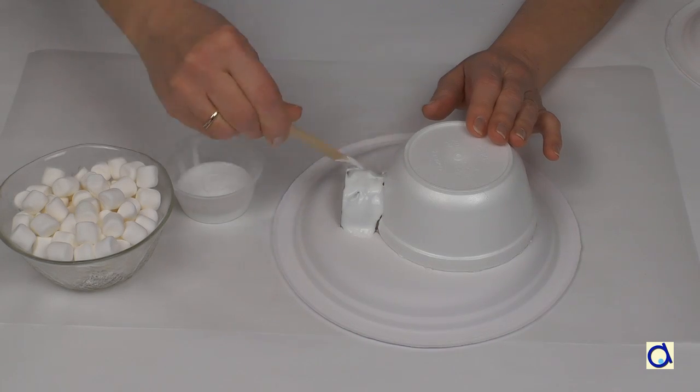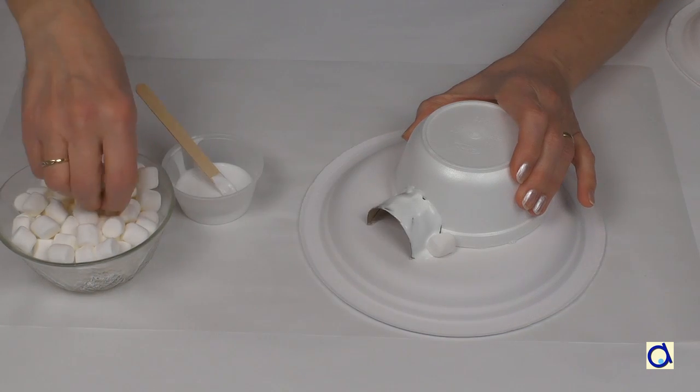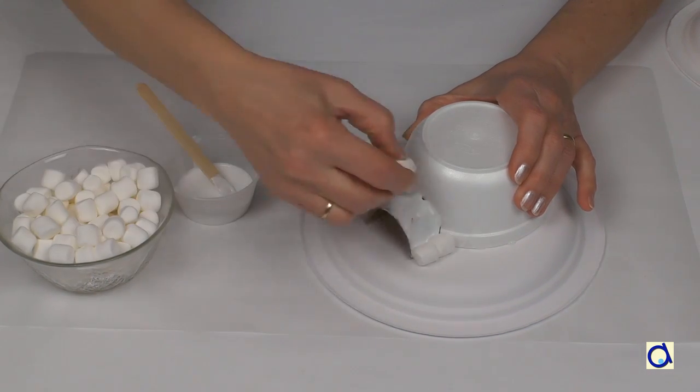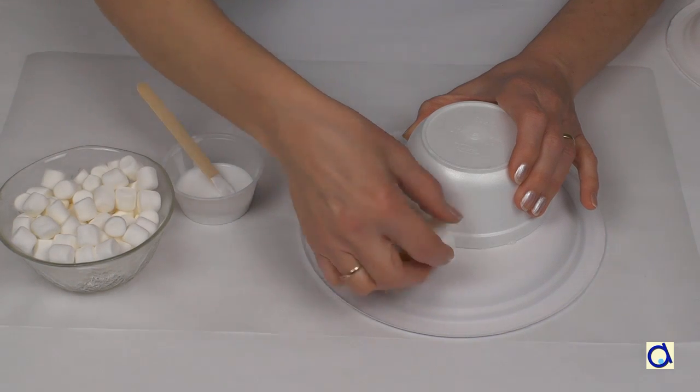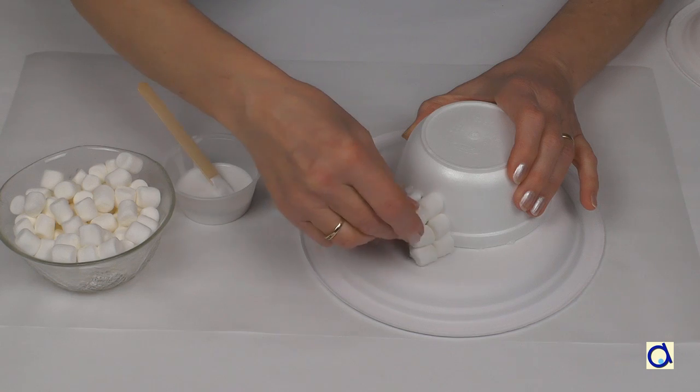To give the impression of blocks of snow, you can use mini marshmallows. Apply white glue on the tunnel using a wooden stick. Then glue marshmallows in tidy rows on the tunnel.